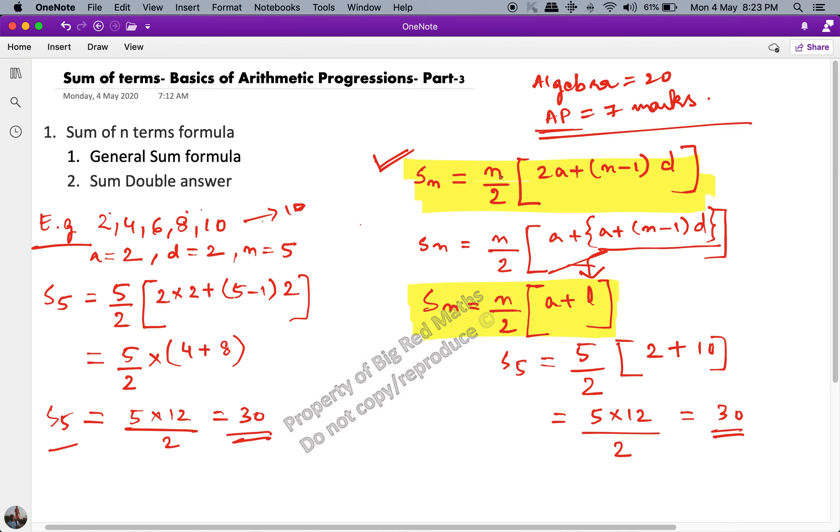And the other formula that is being used here is the sum of the first n terms formula, which is this one. Now in some cases, we are studying about this concept, where there are some times when you get a double answer. What do we mean by a double answer? It will say find the sum of the first 18 terms of the series and find the sum of the first 19 terms of the series.